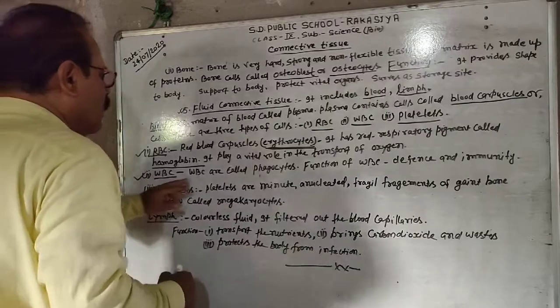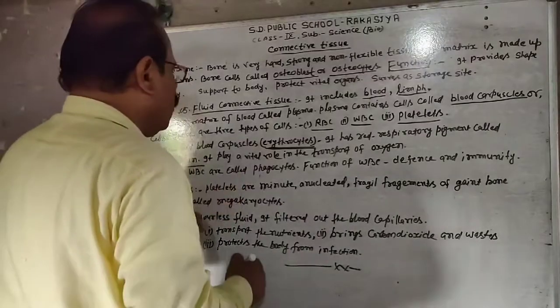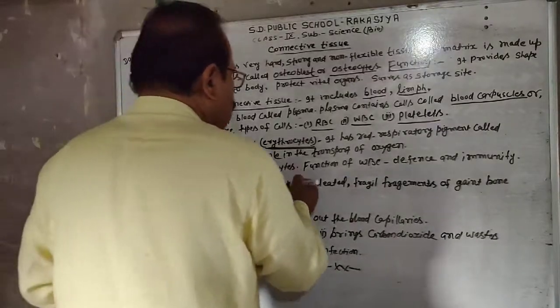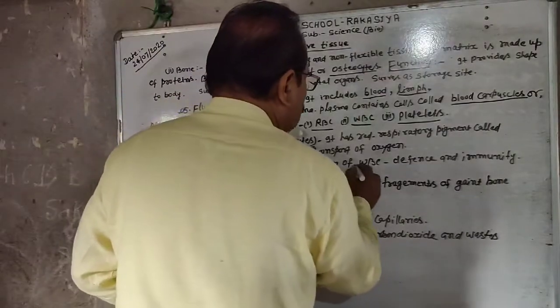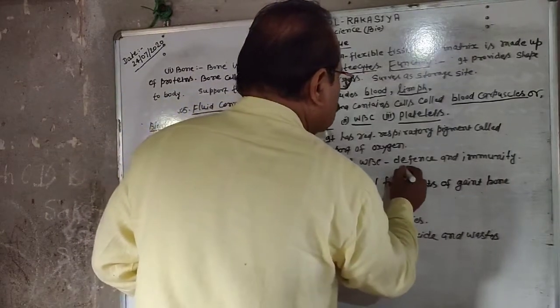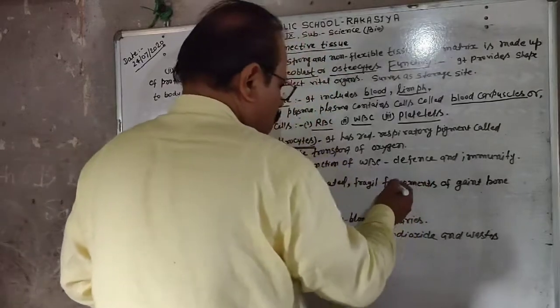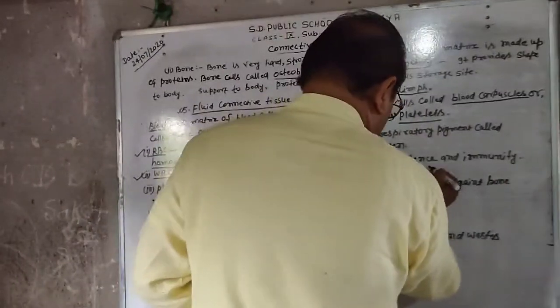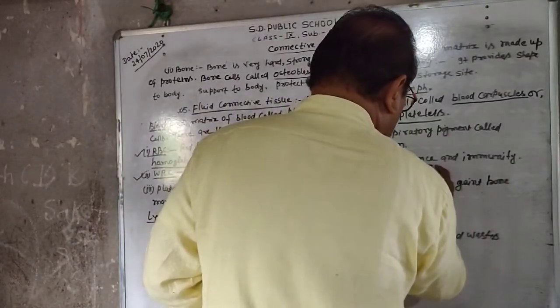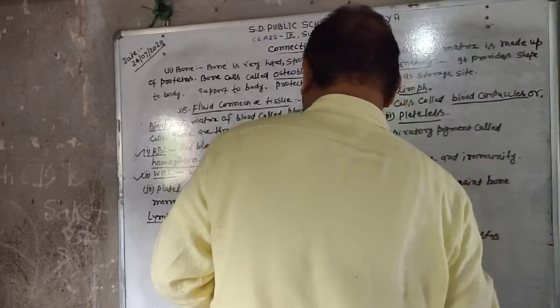WBC are called fibrocytes. The function of WBC is defense and immunity.